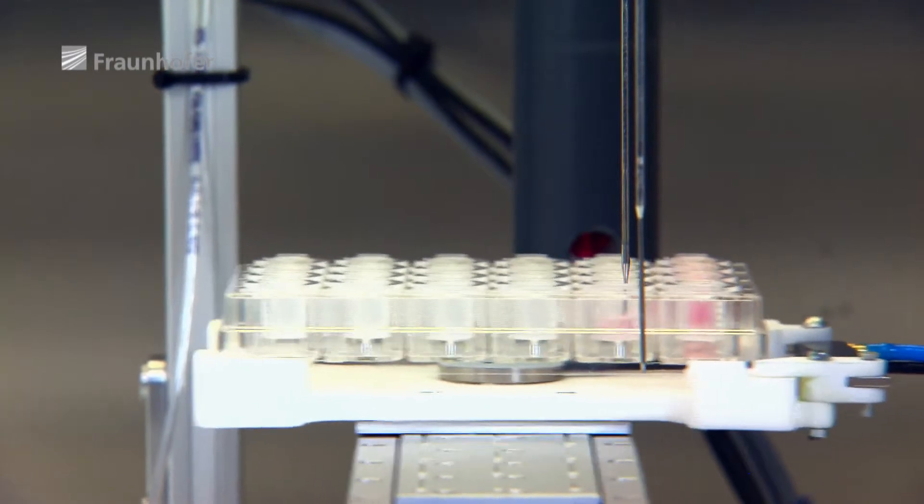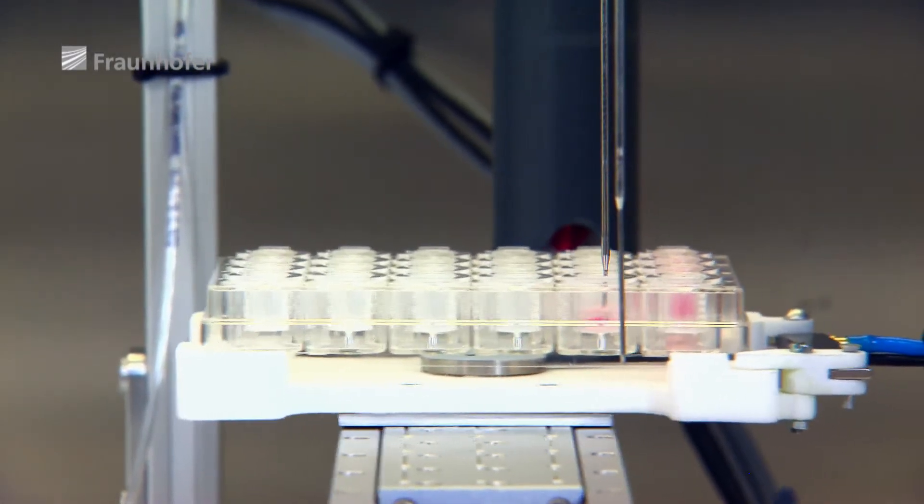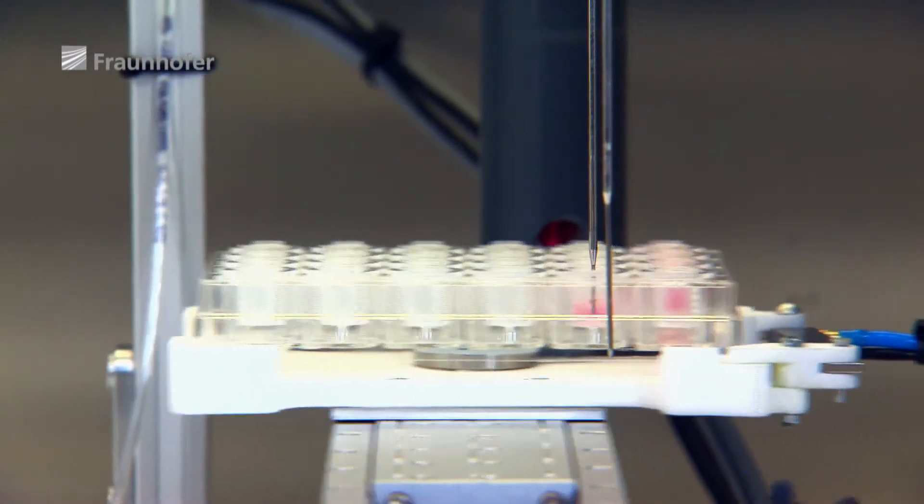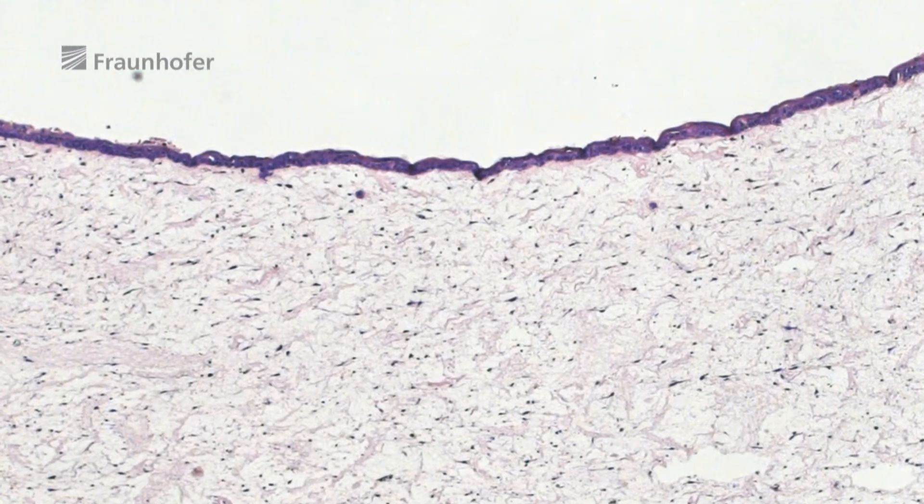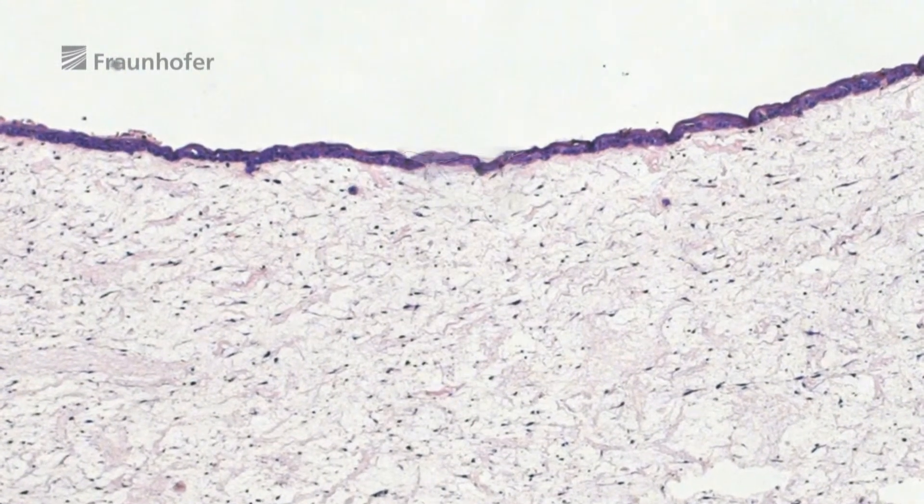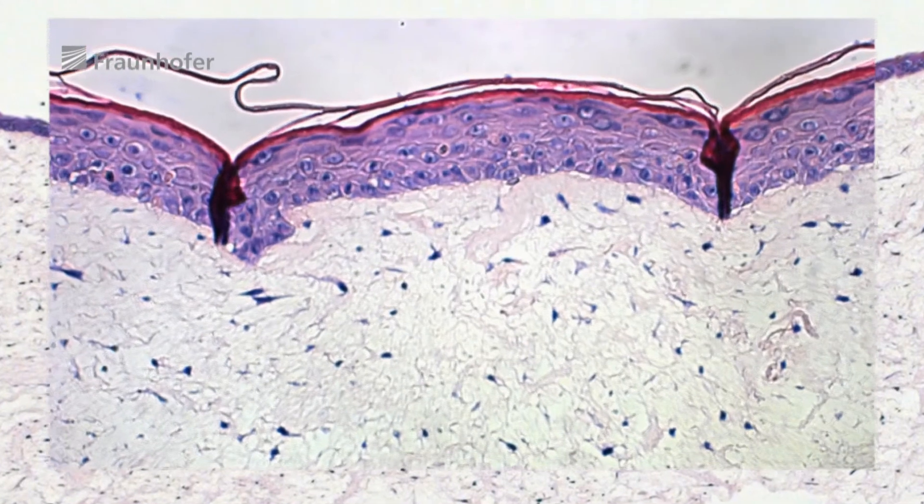Mixed well with collagen, within about two weeks, each of the small plates holds a full-grown, three-layered piece of skin, just like human skin, with the epidermis, dermis and subcutis.